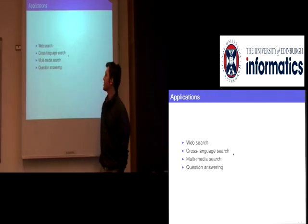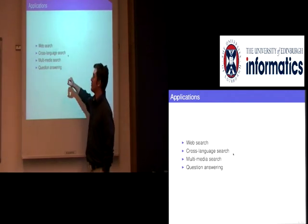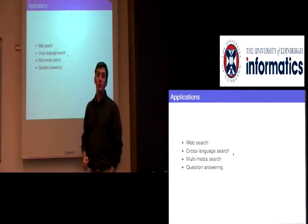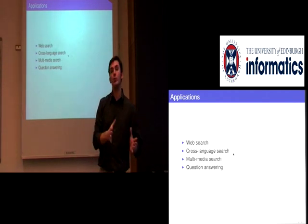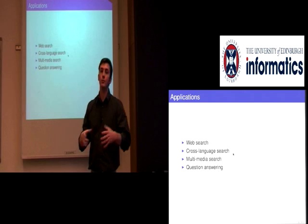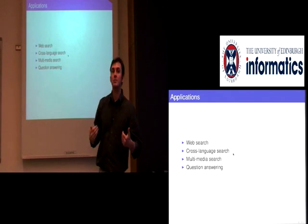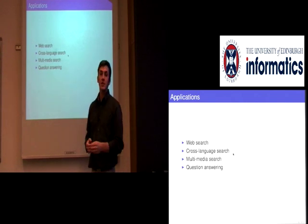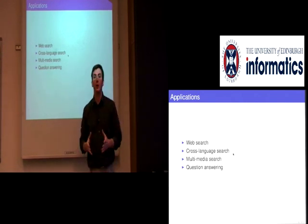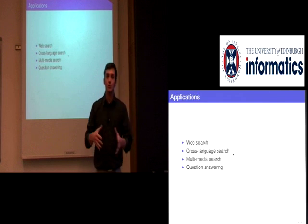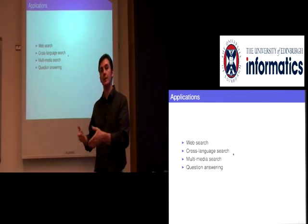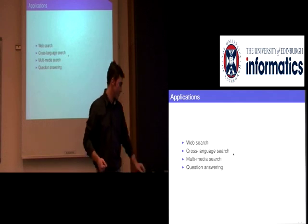On the application side, we'll look at web search. So what are the things that are specific to the web? We will look at cross-language search. So how do you search across a language boundary? For example, if an English speaker wants to find Arabic documents of interest, how can you search multimedia and perhaps others such as how do you answer questions as opposed to giving a ranked list of documents as a result?